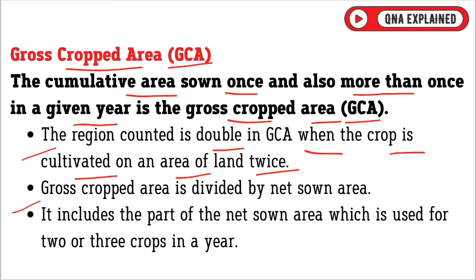Gross cropped area is divided by net sown area. It includes the part of the net sown area which is used for two or three crops in a year.